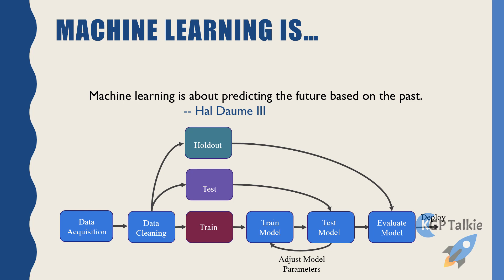If we break machine learning into a block diagram and into simple terms, we can say that machine learning is about predicting the future based on the past. How do we do it? Let's say we have data — we acquire data or we already have data — then we do some data cleaning.